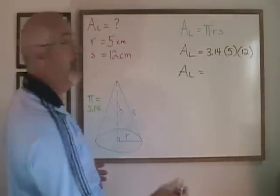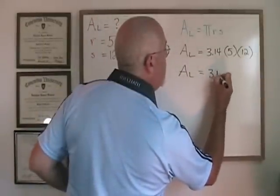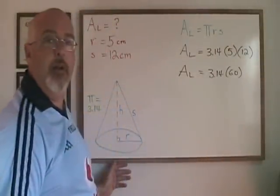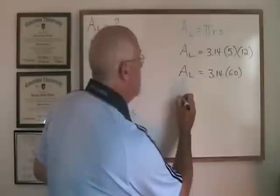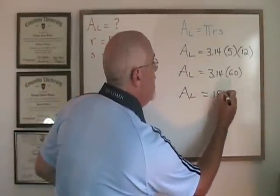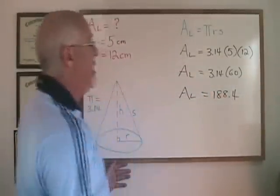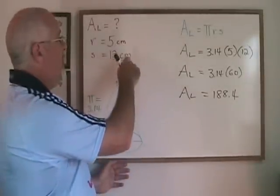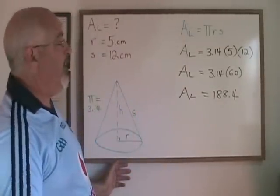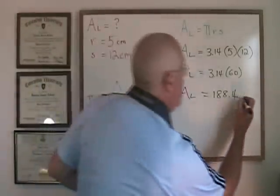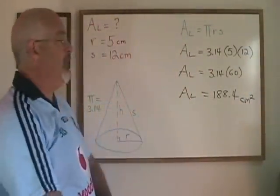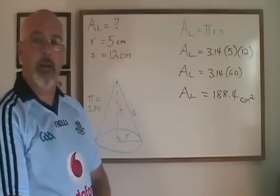Simplifying: 5 times 12 is 60, so we have pi times 60, and pi times 60 is 188.4. So the lateral area of this cone is 188.4. Because we were working with centimeters for our distances, the unit for area will be centimeters squared. The lateral area of this cone is 188.4 centimeters squared.